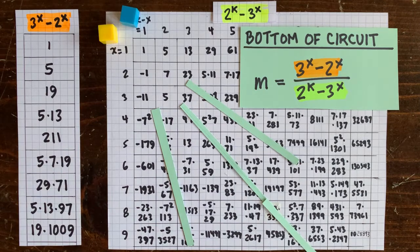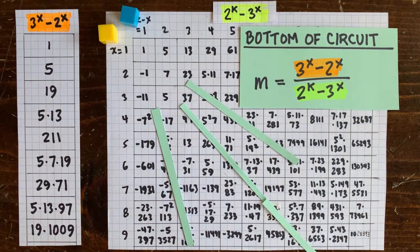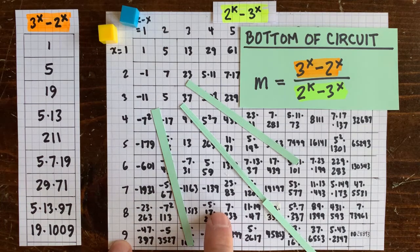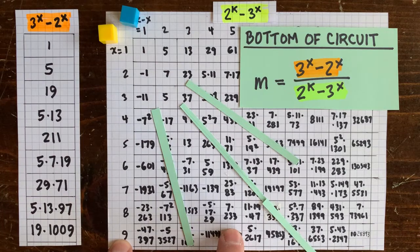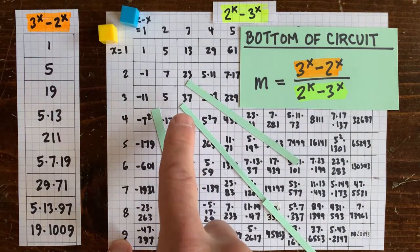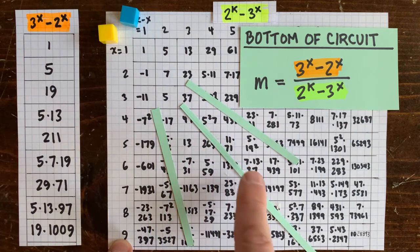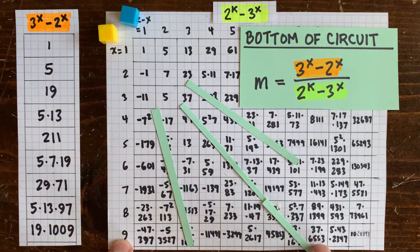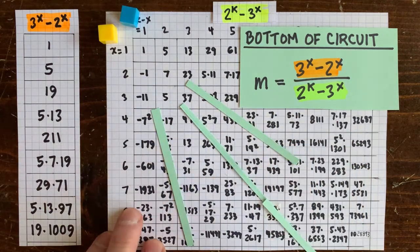We've been investigating the prime factors of those expressions. For example, we saw how the factors of 2 to the k minus 3 to the x radiate out in a pattern of sunbeams. For example, the 37 in cell 3-3 gets inherited by cells 6-6 and 9-9 and so on. So, where else does something like 37 appear in this chart?